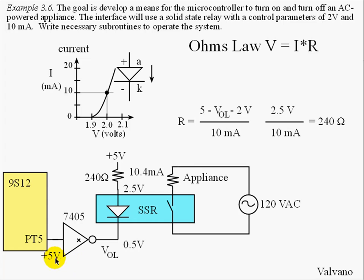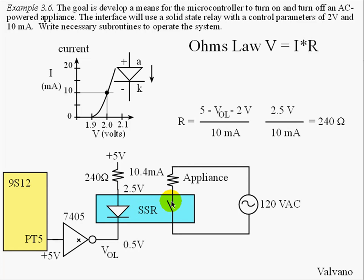Let's review. When the software sets the output high, there will be 5 volts on this pin. The 7405 open collector driver will have an output of 0.5 volts, 2 volts will drop across the diode, and this voltage will be 2.5. The 240 ohm resistor will supply 10.4 milliamps — very close to what we needed — and this LED will turn on. The solid state relay will then close the switch and power will be applied to the appliance.